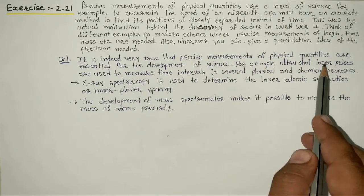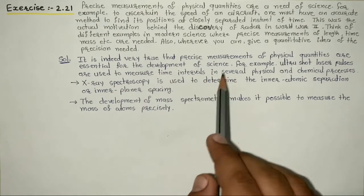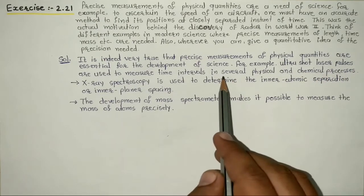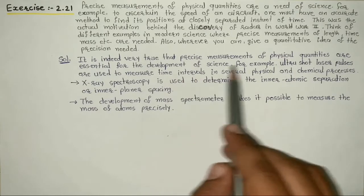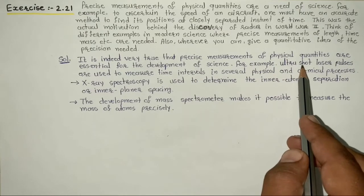For example, ultra short laser pulses are used to measure time interval in several physical and chemical processes. This is precise measurement.